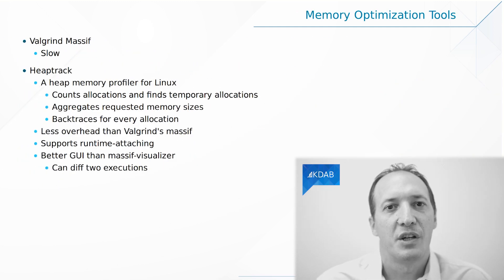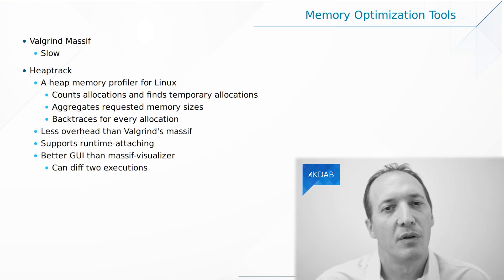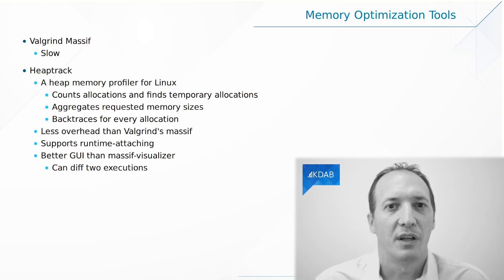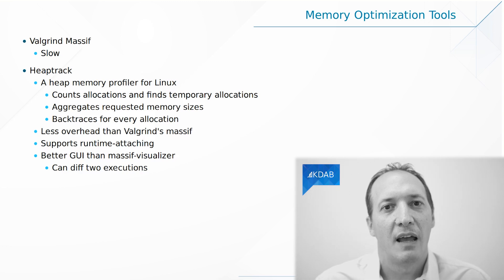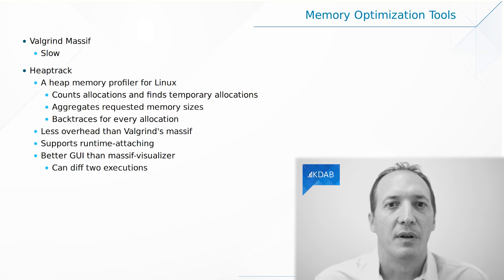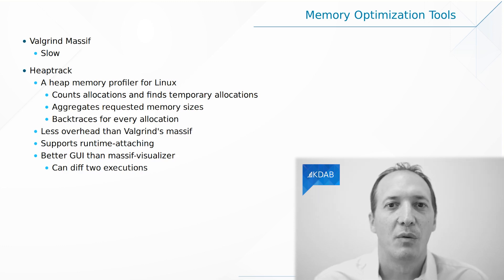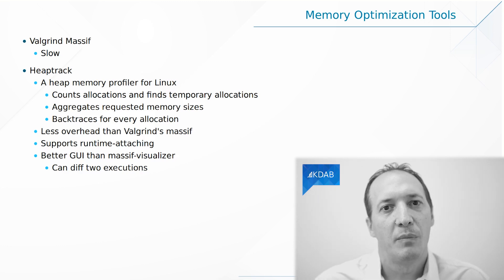Another thing we might want to measure is memory allocations — not just memory leaks, but also simply the use of memory while the application is running. If your application is cleaning up everything at the end, heavy memory usage will not show up as a leak, so the leak checking tools will not help. But if your application is using too much memory while it's running, you might want to use different tools that can pinpoint where those allocations happen.